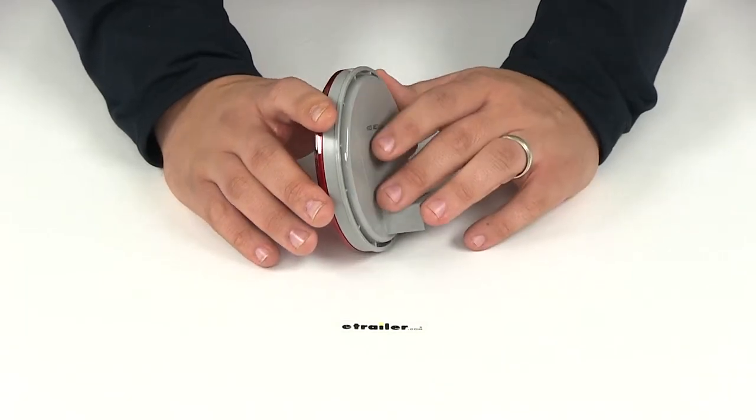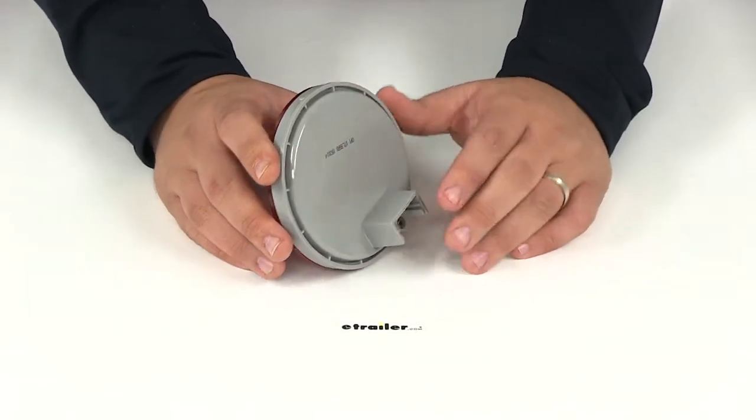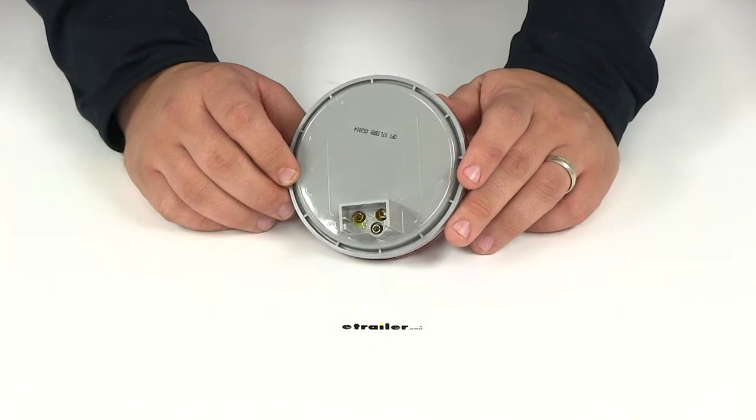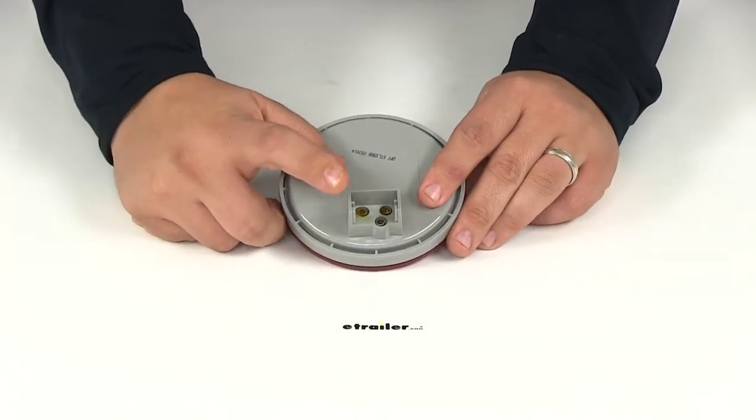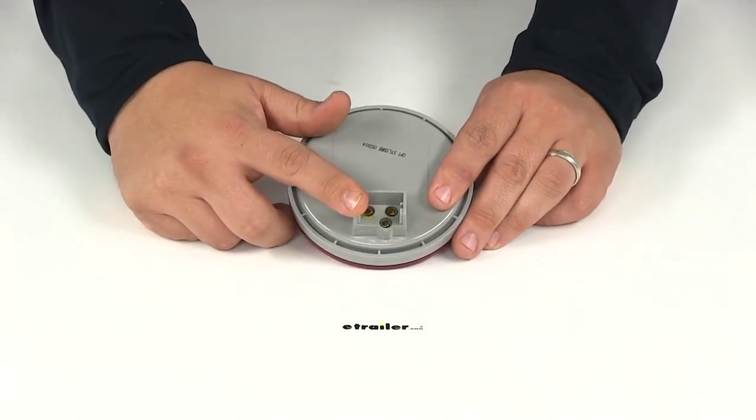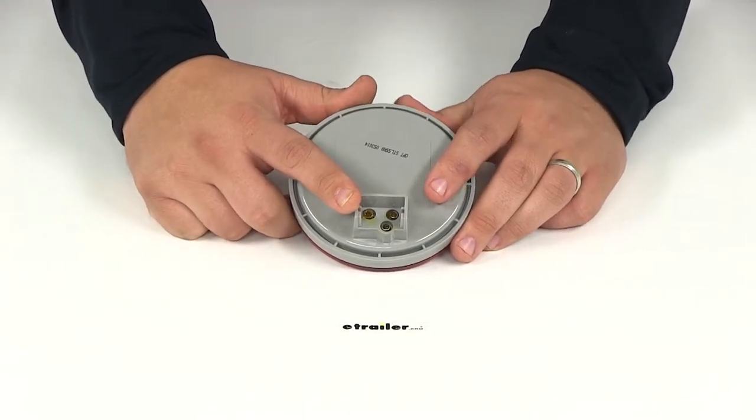This is a recessed grommet mount, but the grommet is sold separately. You can find that at eTrailer.com with part number 845GB. It also accepts the industry standard three-prong plug, which is sold separately as well.